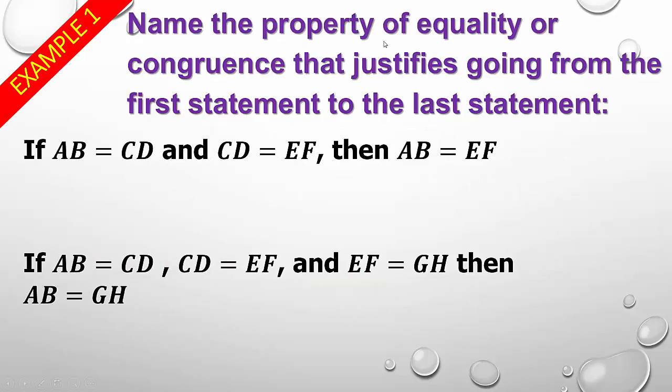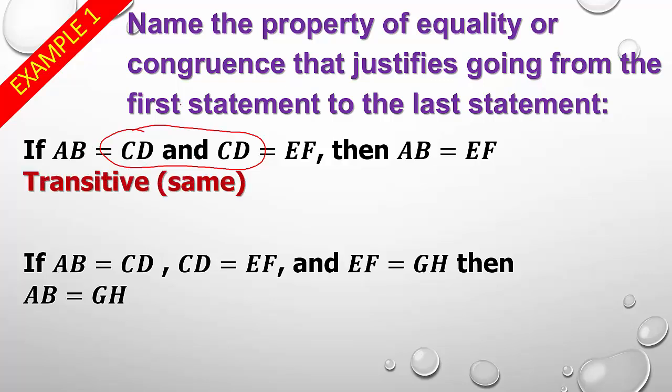So, like here, we would want to name the property of equality or congruence that justifies going from the first statement to the last statement. So, you've got to look at the first statement, then you have to look at the last statement. So, if you look at this first statement, we've got AB congruent to or equal to CD and CD equal to EF. And we're assuming, then, that AB and EF are equal. So, if you have one segment or angle that is congruent to two different ones, then we would say that that's Transitive Same. Alright?